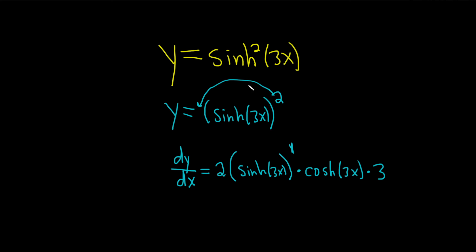So again, it was just a double chain rule. We brought down the 2, left the inside untouched, subtract 1, and then times the derivative of sinh 3x, which is cosh 3x times the derivative of 3x, which is 3.